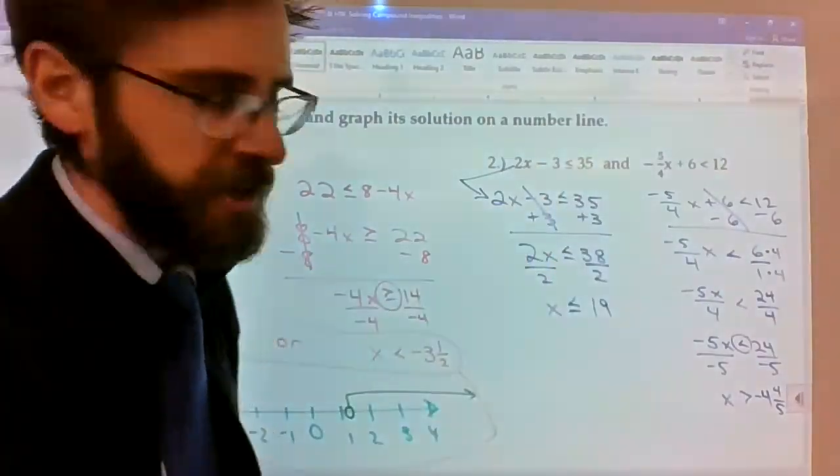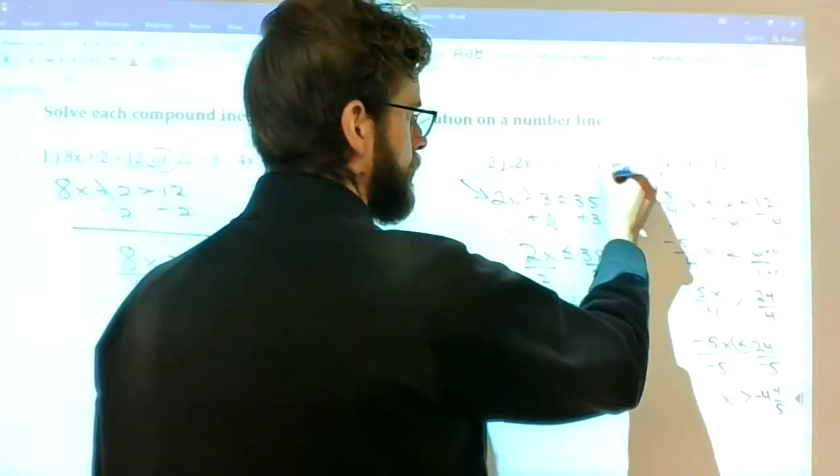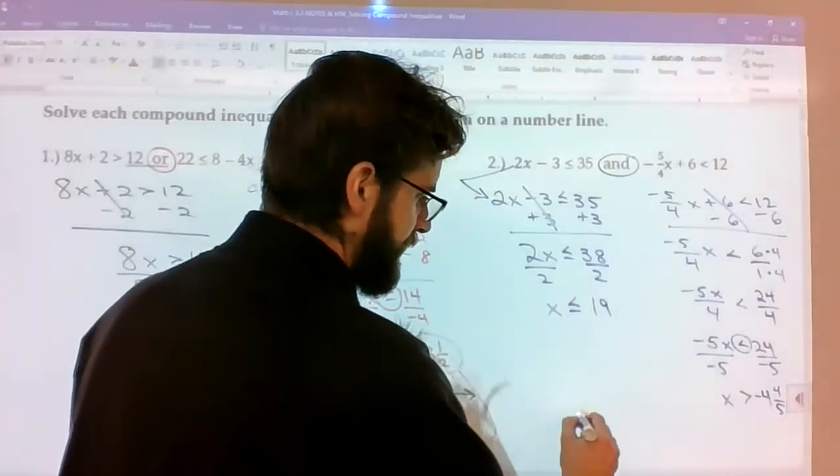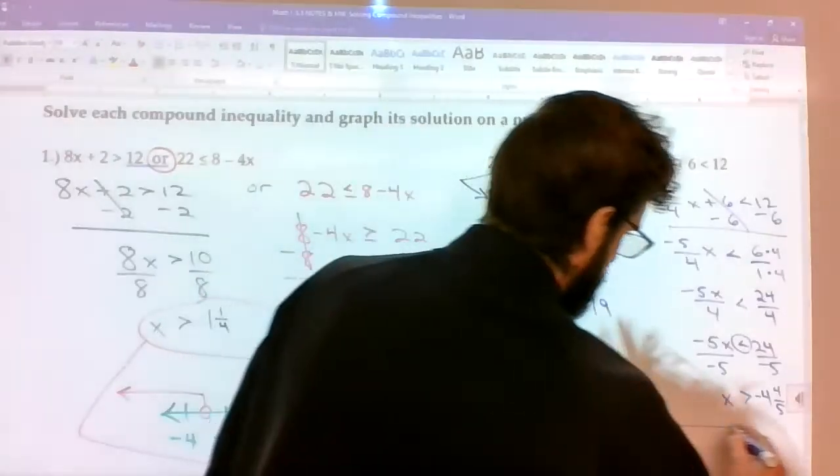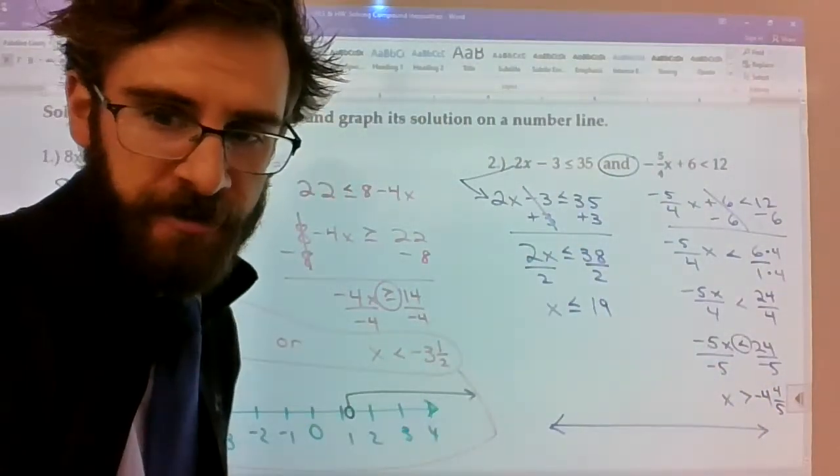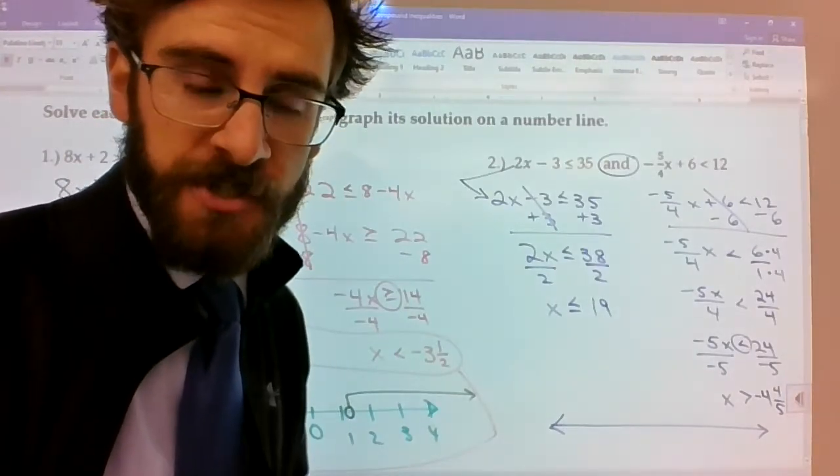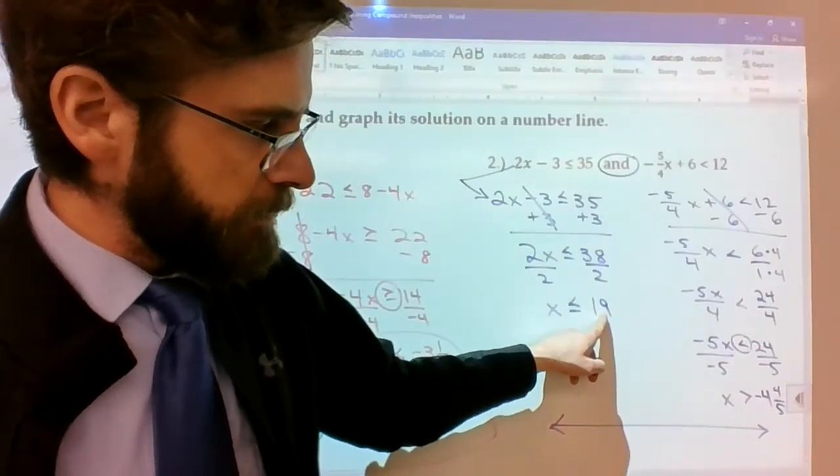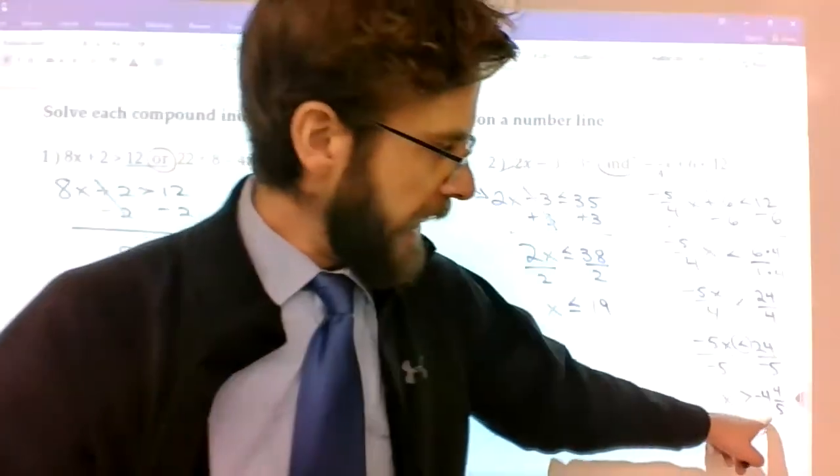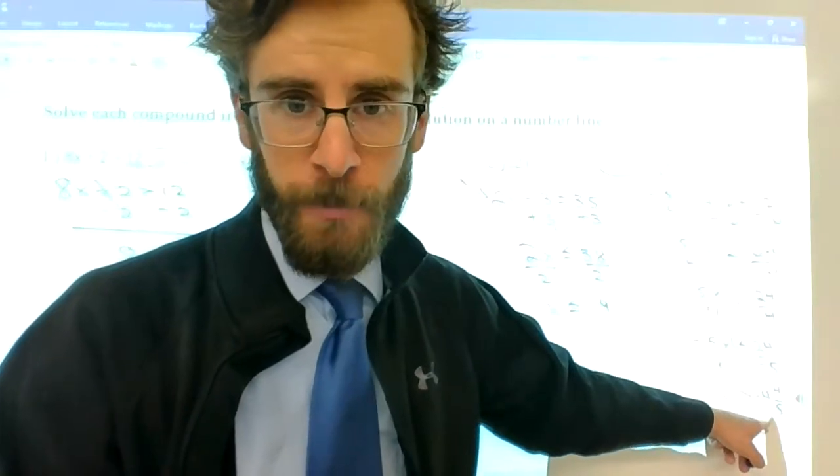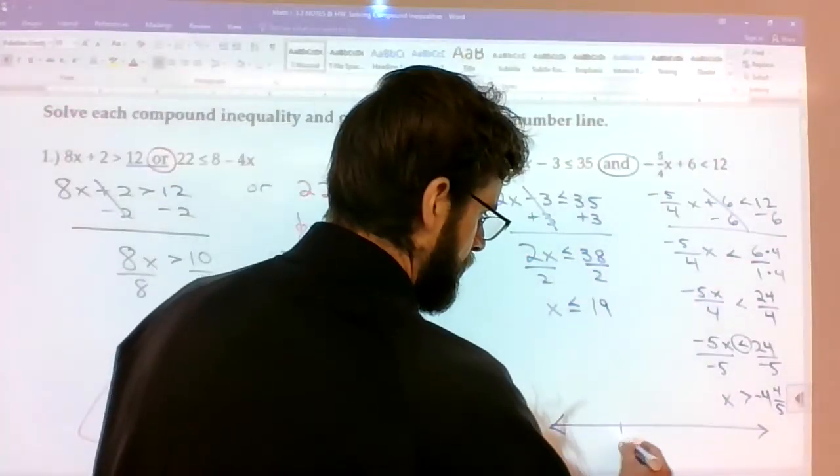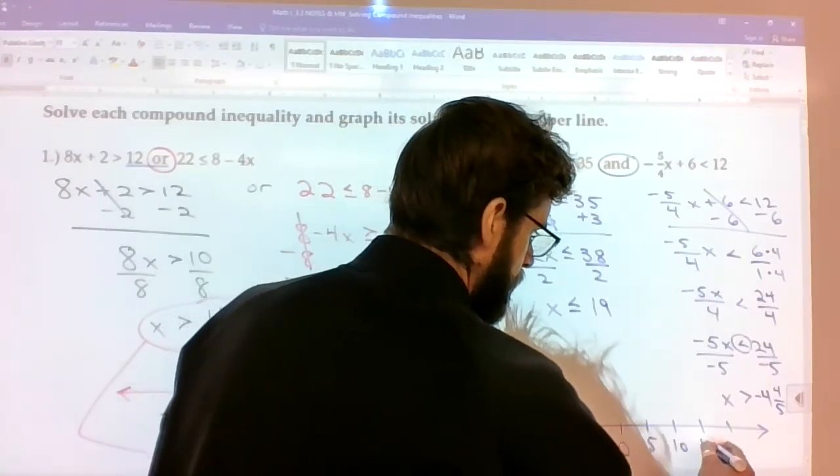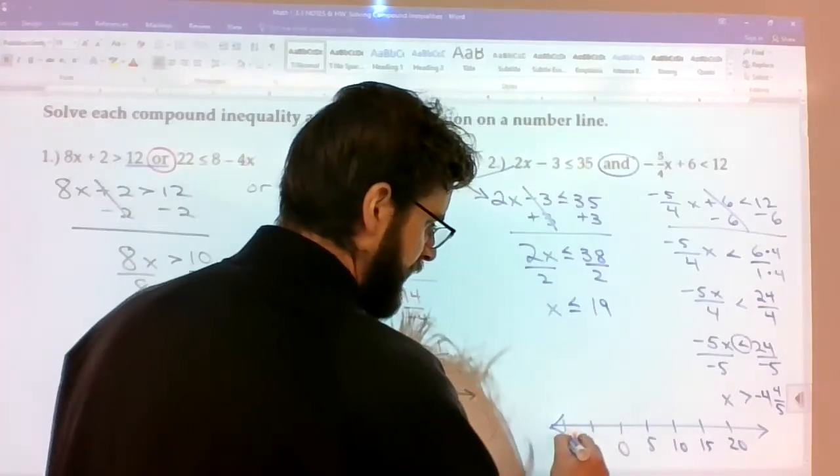Alright, so we had an AND situation here. So our job is going to be to graph the intersection of these two solutions or the shared space of those two solutions. So you know what? I'm going to count by 5s because that's really close to 20, which is a multiple of 5, and that's really close to negative 5, which is a multiple of 5. 5, 10, 15, 20, negative 5, negative 10.